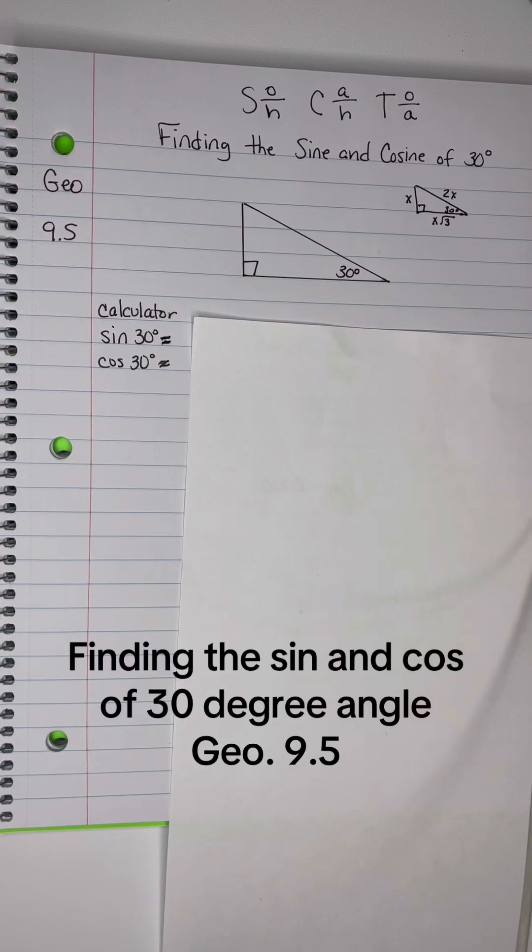Okay, now let's find the sine and cosine of 30 degrees using the special triangle rules and just using trig.